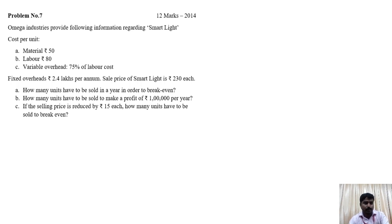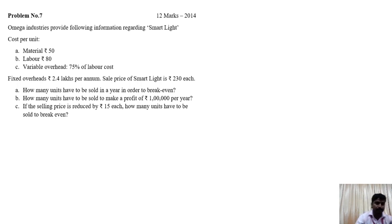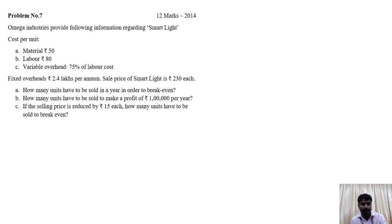Omega Industries provides the following information regarding Smart Light. The cost per unit is given: material, labor, and variable overhead. Material is rupees 50 per unit, labor is rupees 80 per unit, and variable overheads are 75% of the labor cost, which is 60 rupees. There is also information regarding fixed overheads: rupees 2,40,000 per annum. The sales price is rupees 230 each.